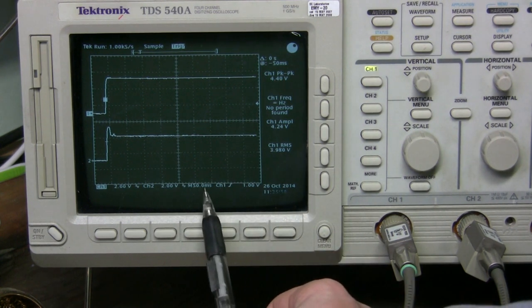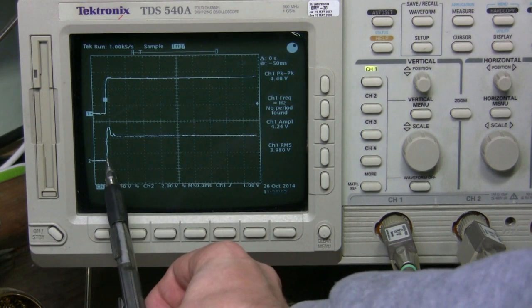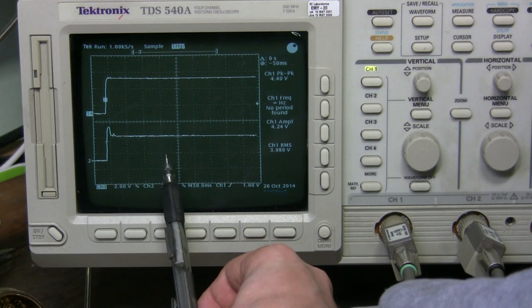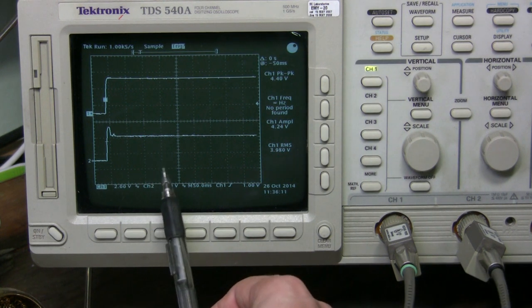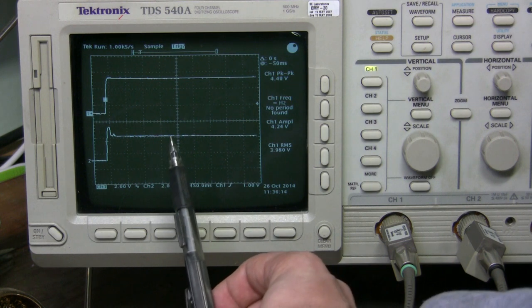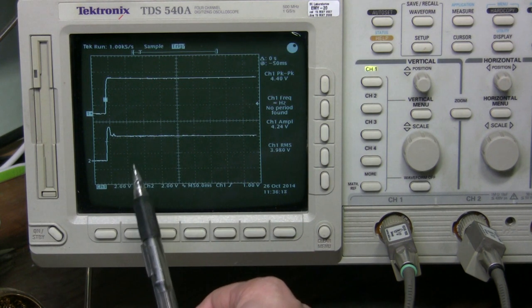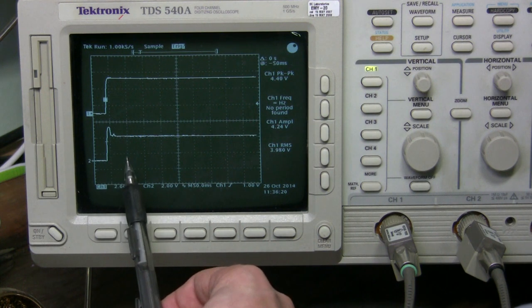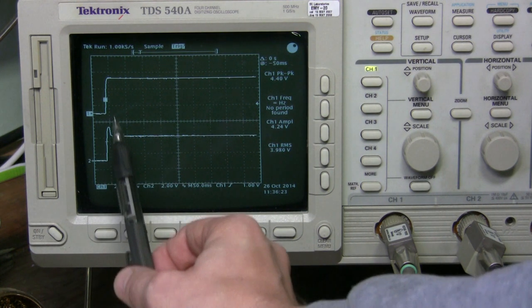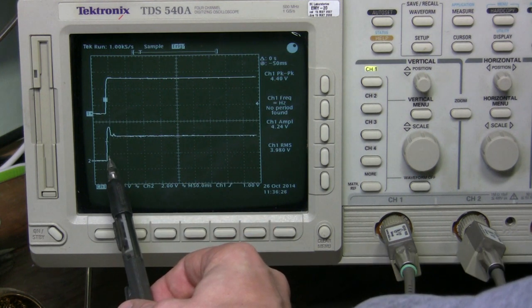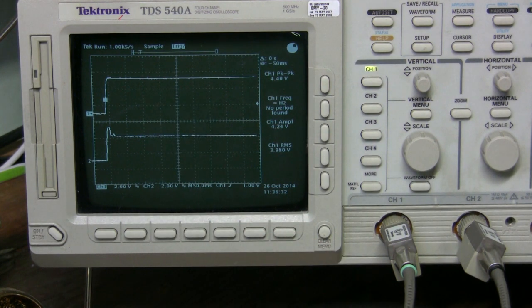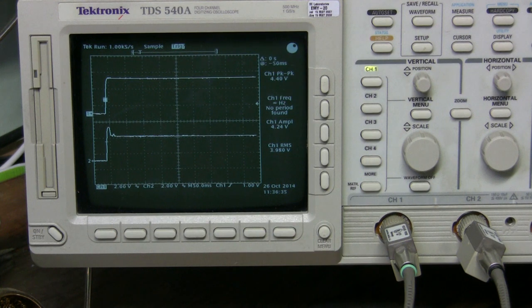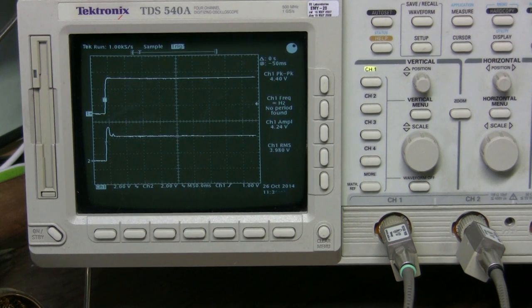So remember this is 50 milliseconds per division, and remember that number 140 milliseconds minimum reset in the specs of the reset chip. So we should expect about three divisions after power goes high, the reset line should stay low for about three divisions and it doesn't. It goes high right at the moment of power going high so there is no reset happening here at all. And I believe this reset chip is faulty.